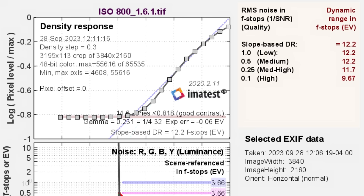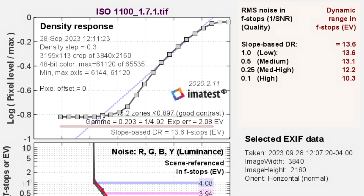We found that the biggest jump — where it was like, okay, now we're doing something different — was around 1100. And you can just look at the graph, it's totally different. The line's over here, all these stops are now being measured, everything's completely different. The slope-based DR jumps up to 13.6.